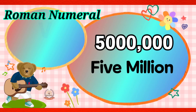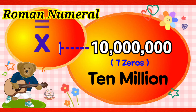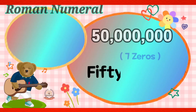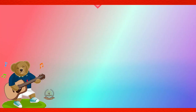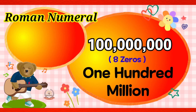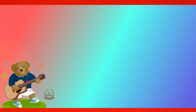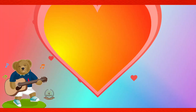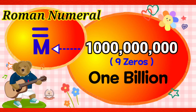5,000,000 is V with 2 bars at the top. 10,000,000 is X with 2 bars at the top. 50,000,000 is L with 2 bars at the top. 100,000,000 is C with 2 bars at the top. 500,000,000 is D with 2 bars at the top. 1,000,000,000 is M with 2 bars at the top.